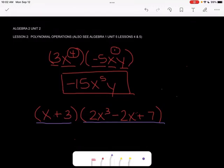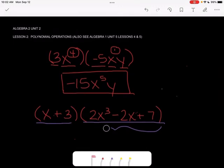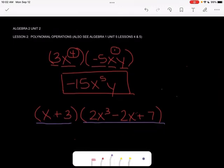When we're multiplying here, I need to multiply everything in the first polynomial, the x plus 3. I need to multiply the x times everything in this. I also need to multiply the 3 times everything in that as well. So I'm going to show by drawing arrows. x times that, x times that, x times that, and then 3 times each of those as well.